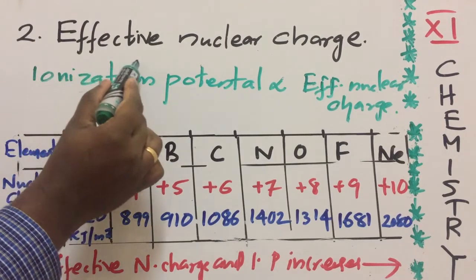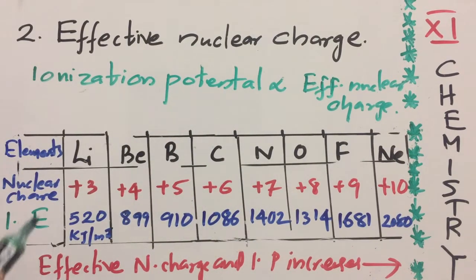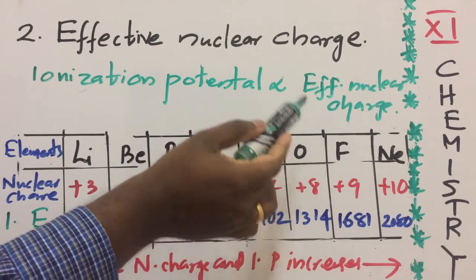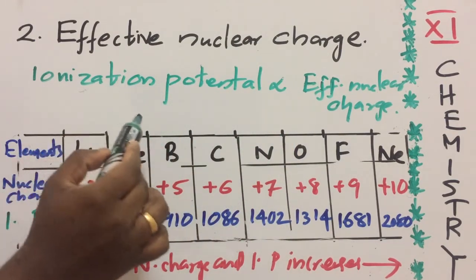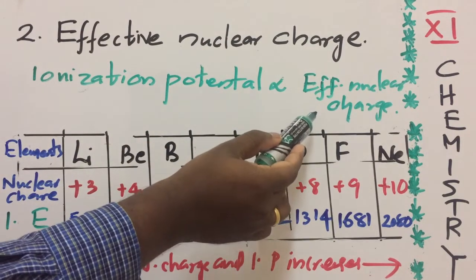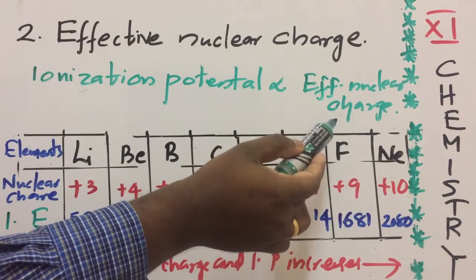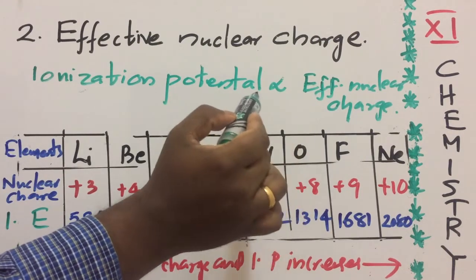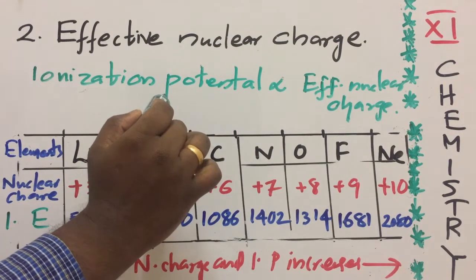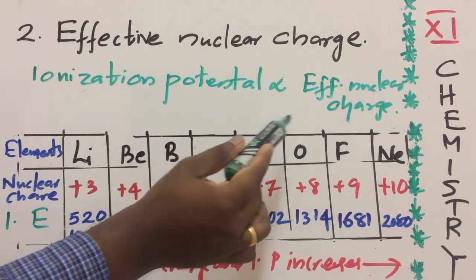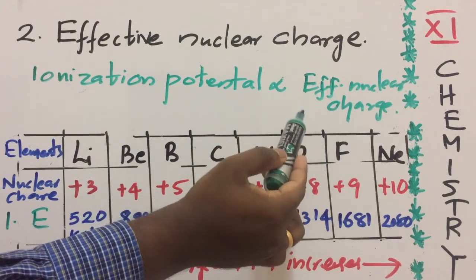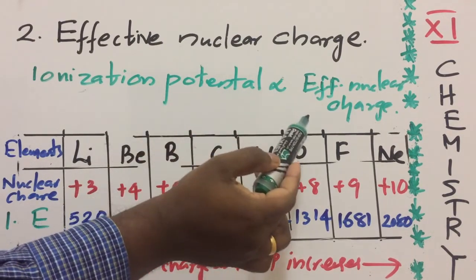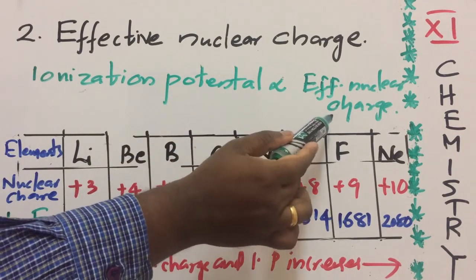The next factor is effective nuclear charge. Ionization potential is directly related to effective nuclear charge — that is, as effective nuclear charge increases, the ionization potential of that element also increases. We know that when effective nuclear charge increases, the size of the atom decreases, and when the size of the atom decreases, ionization potential will increase. So ionization potential is directly related to effective nuclear charge.